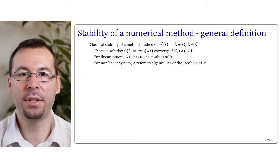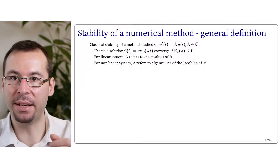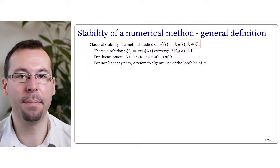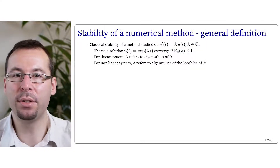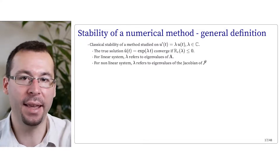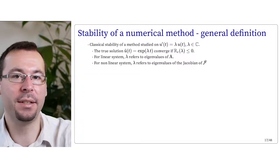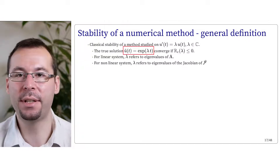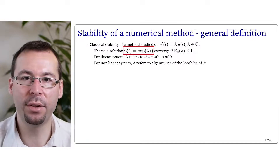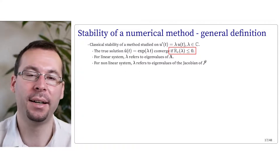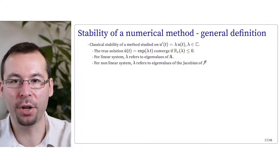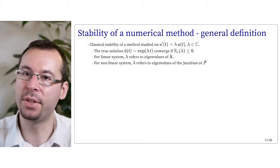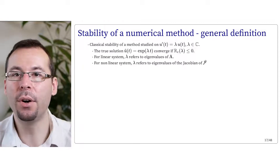In addition to accuracy, there is the notion of stability. To study stability, we look at the numerical solution of the scalar equation u prime = λu, where λ is in the complex plane. This equation is interesting because λ refers to the eigenvalues of matrix A in the affine case, and to eigenvalues of the Jacobian of f for nonlinear systems. The exact solution is e^{λt}, which converges if Re(λ) < 0, diverges if Re(λ) > 0, and oscillates permanently if Re(λ) = 0.